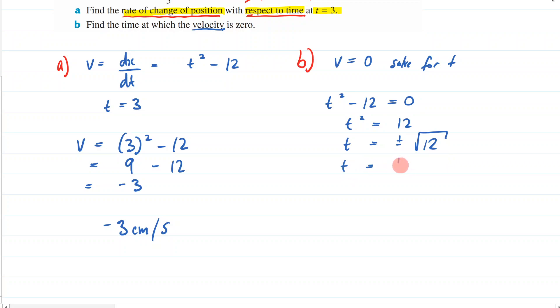t is equal to plus or minus the square root of 12. Now, people do like to simplify these things. So I could write this as 4 times 3, plus or minus 2 can come out the front here, square root of 3.